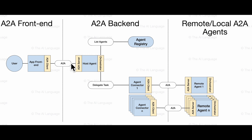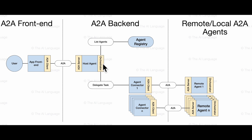The host agent exposes an A2A server which receives the incoming request from the A2A client. This host agent also hosts an orchestrator, which will orchestrate the task and communicate with several other agents to provide a solution. Once the host agent receives a task, it hands it over to the orchestrator agent. We tell the orchestrator it has two tools: a list agents tool and a delegate task tool. The list agents tool helps the orchestrator list all agents available from an agent registry.